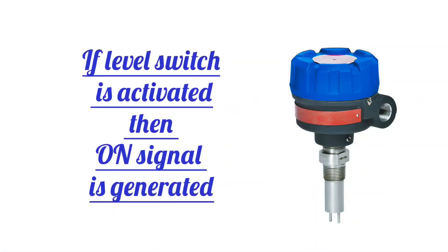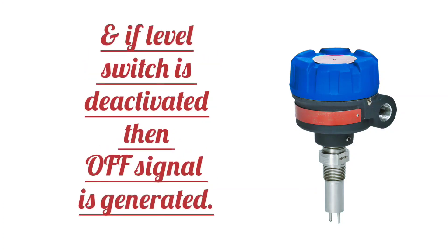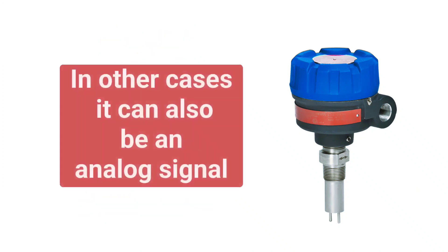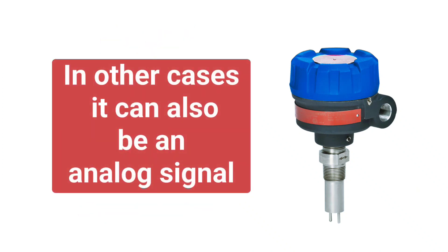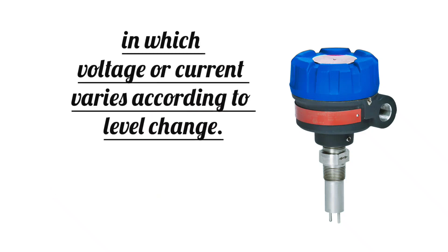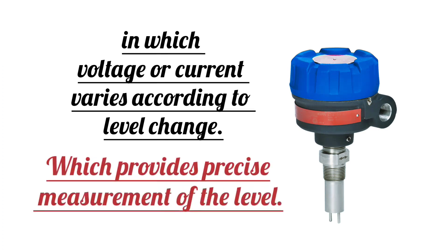If the level switch is activated, then an on signal is generated. And if the level switch is deactivated, then an off signal is generated. In other cases, it can also be an analog signal, in which voltage or current varies according to level change, which provides precise measurement of the level.